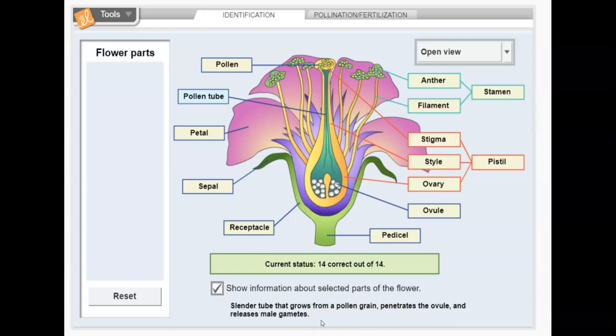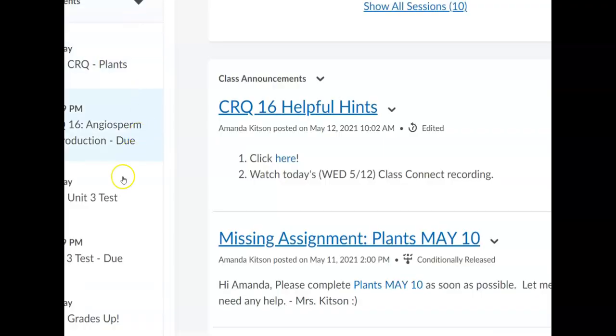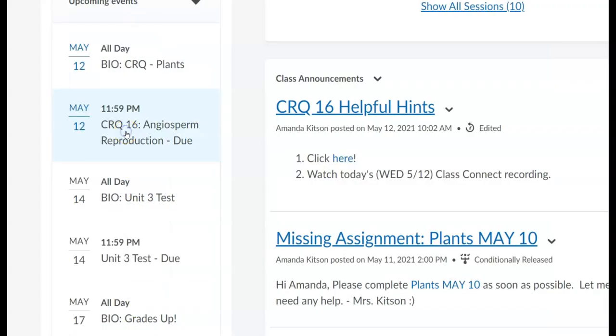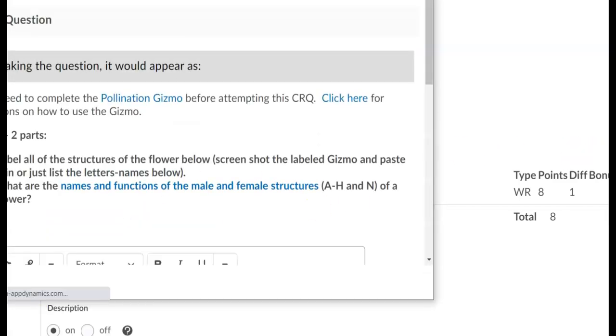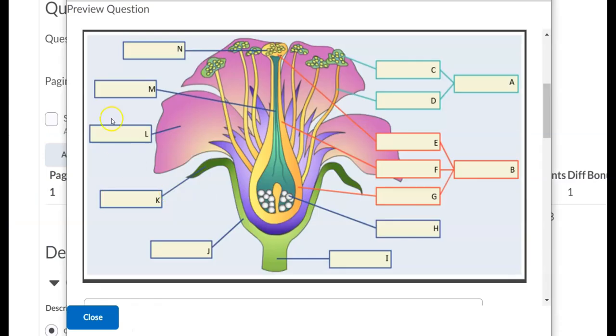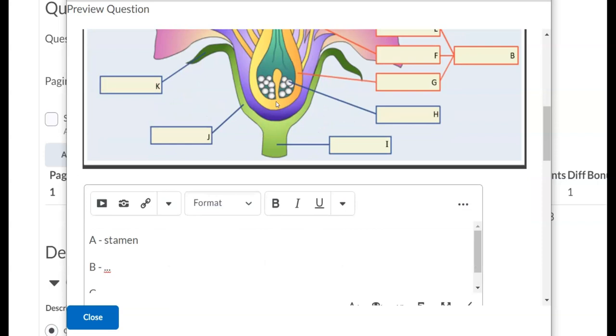So what you have to do now that it's labeled, you have to either grab a screenshot of this and put it in the CRQ or when you write your CRQ, you'll notice that they're labeled with letters.